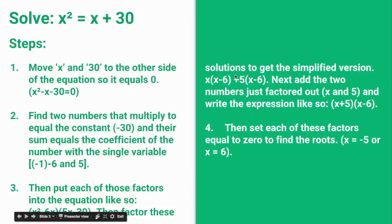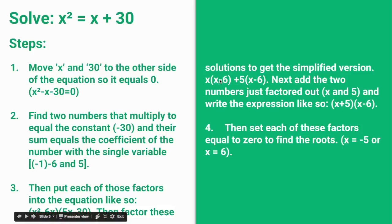The next step is to simplify by factoring. You take x out of x squared minus 6x to get x times x minus 6. Then you take 5 out of 5x minus 30 to get 5 times x minus 6. The two factors should both be the same — in this case they are both x minus 6.